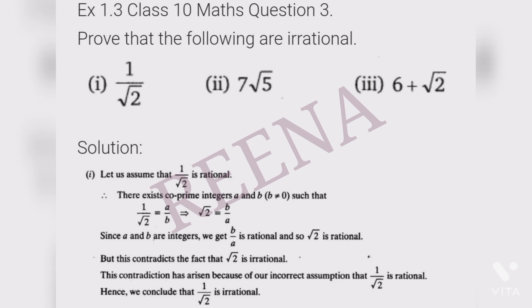For 1/√2: assume it equals a/b where a and b are co-prime and b ≠ 0. Cross-multiplying to keep √2 alone gives √2 = b/a. Since b/a is rational, √2 would be rational — but we know √2 is irrational, which is a contradiction. Therefore 1/√2 is irrational. Similarly for 7√5.